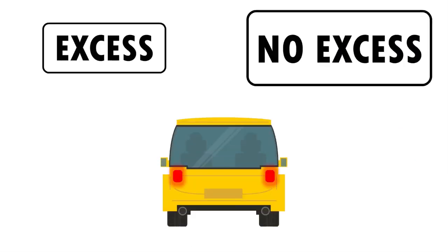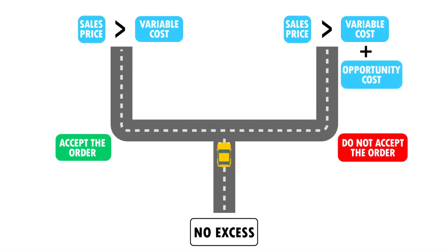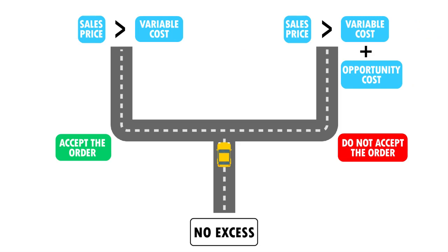Now let's backtrack. What if we didn't have excess capacity? We turn right. We reach another fork in the road going that direction as well — similar question of which one is greater, but with one critical difference: we're going to include opportunity cost. We don't have excess capacity, so if we decide to take on this customer special order, it means there's something else we're not going to be able to make instead. If the sales price is greater than both the variable cost and the opportunity cost of what we won't be able to make instead, we accept the order. However, if the variable and opportunity cost combined exceed the sales price, we should not accept that special order.